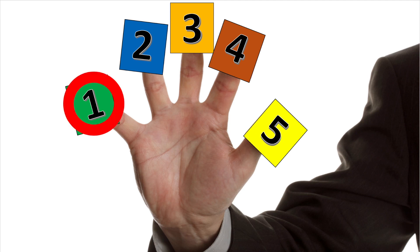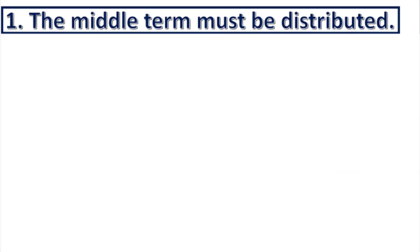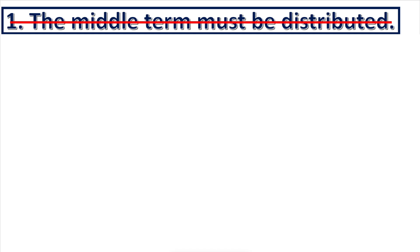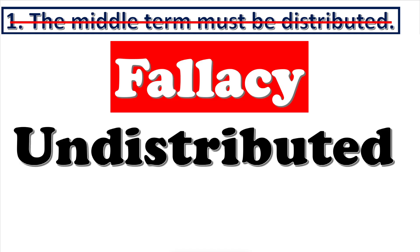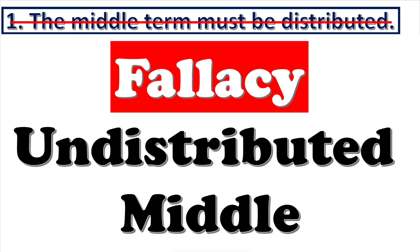Rule one: the middle term must be distributed at least once. If this rule is broken, then the fallacy of undistributed middle is committed.